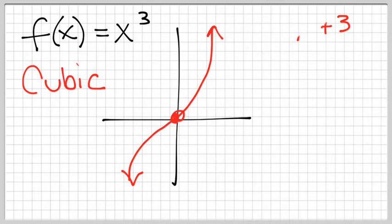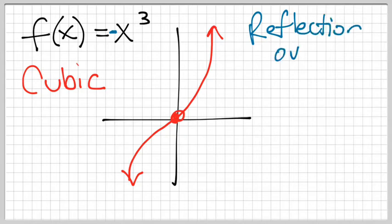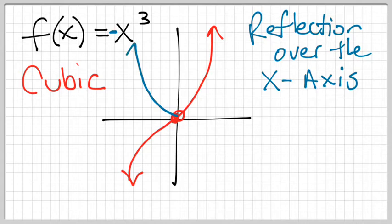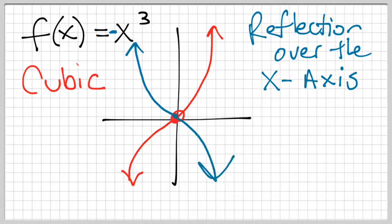This lesson, we're going to be talking about what a negative does to the problem. So if I were to make this a negative x cubed problem, all it does — here's the definition of it — it makes a reflection over the x-axis. That would mean the part towards the bottom actually moves up, and the part in the first quadrant actually comes down. So whenever there's a negative in front of the function, it just means it reflects.